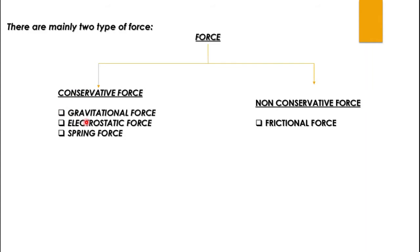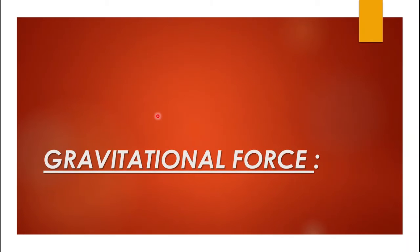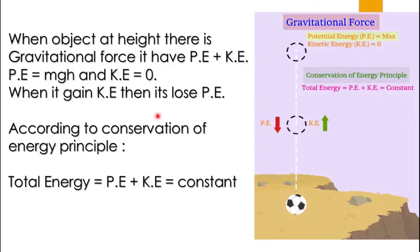In the next part, I am starting with electrostatic potential energy, which involves conservative force. We will first see how gravitational force is a conservative force. Suppose an object is kept at height h. When an object is at any height, there is gravitational force — it has both potential energy and kinetic energy. When it is kept at rest at that height, potential energy is maximum.